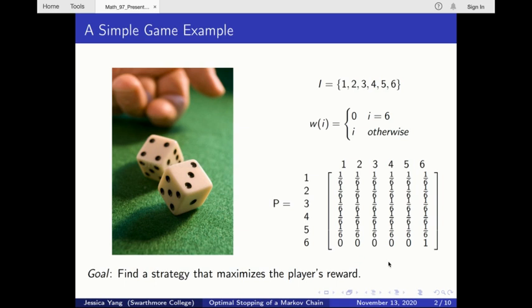Imagine you are rolling a die. If you roll 1, 2, 3, 4, 5, you can stop rolling and pocket a reward that equals your roll, or you can keep rolling. However, whenever you roll a 6, you must stop rolling and you don't win any reward.